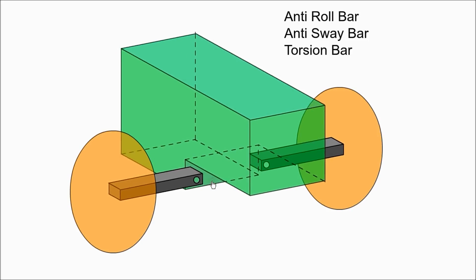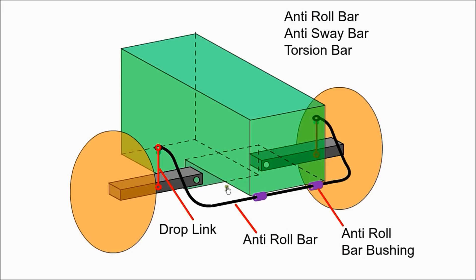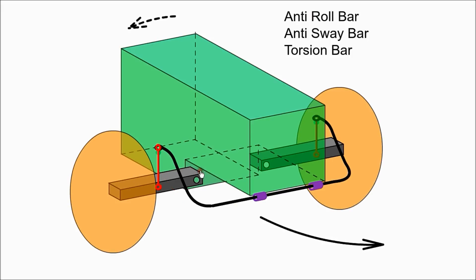An anti-roll bar, sway bar or torsion bar connects left and right side suspension to each other. As the suspension is compressed on one side, it exerts a twisting force on the torsion bar, transferring some of the load to the other wheel, reducing body roll.